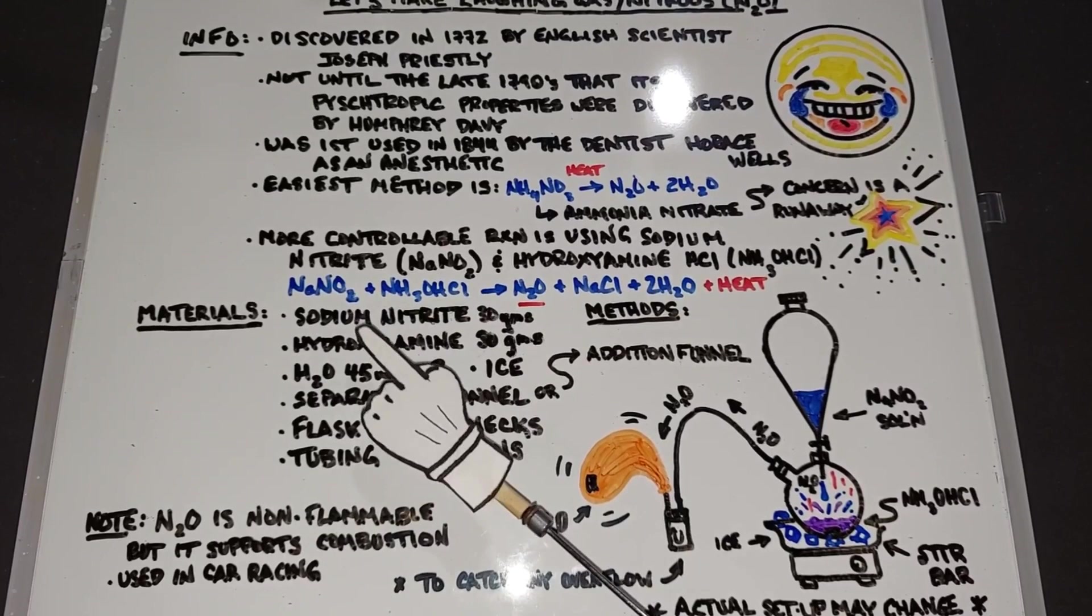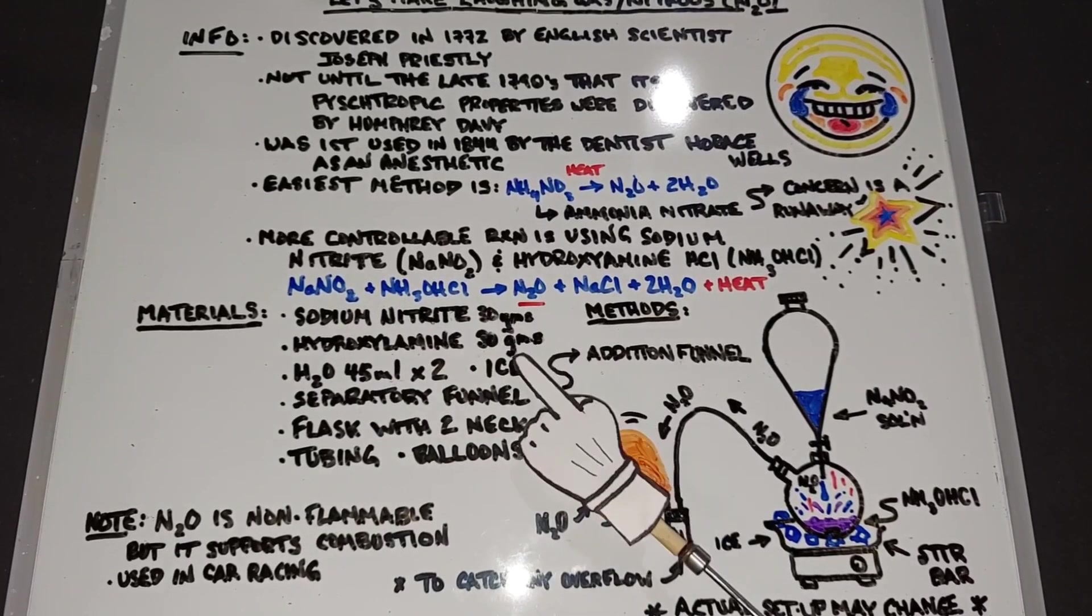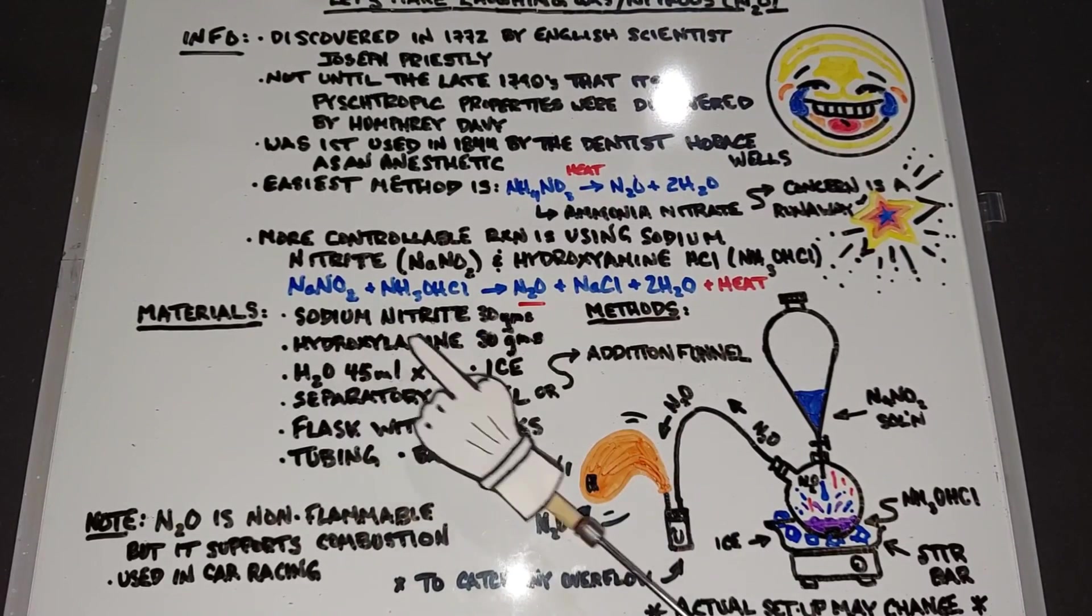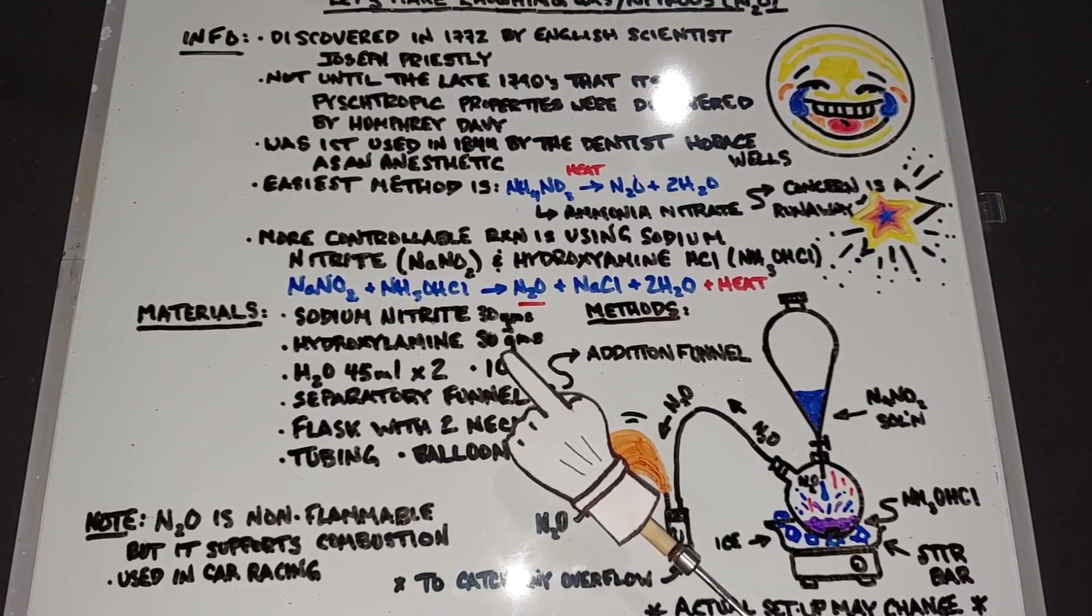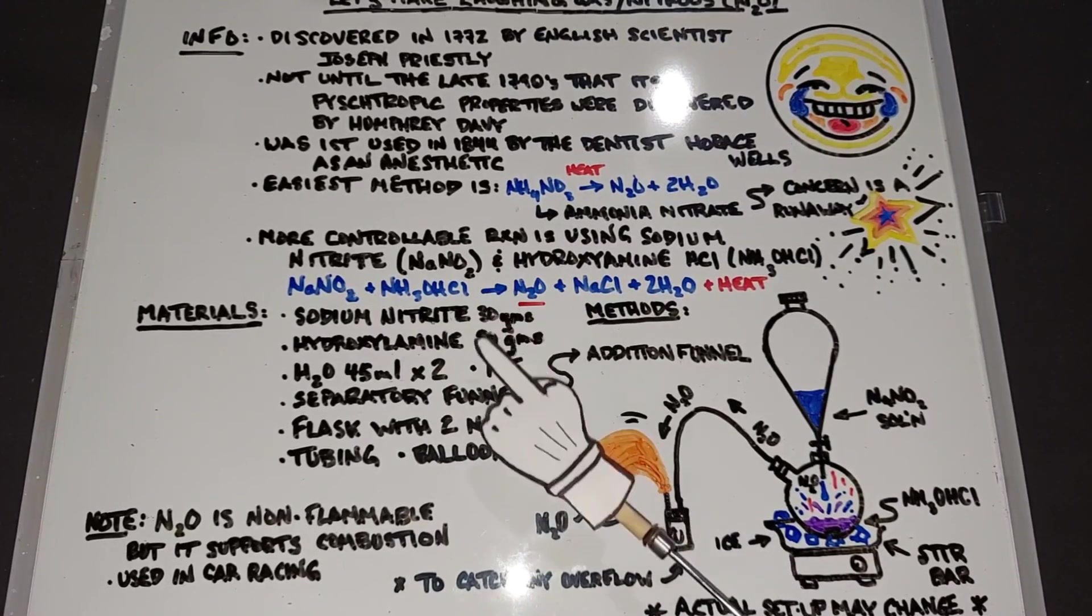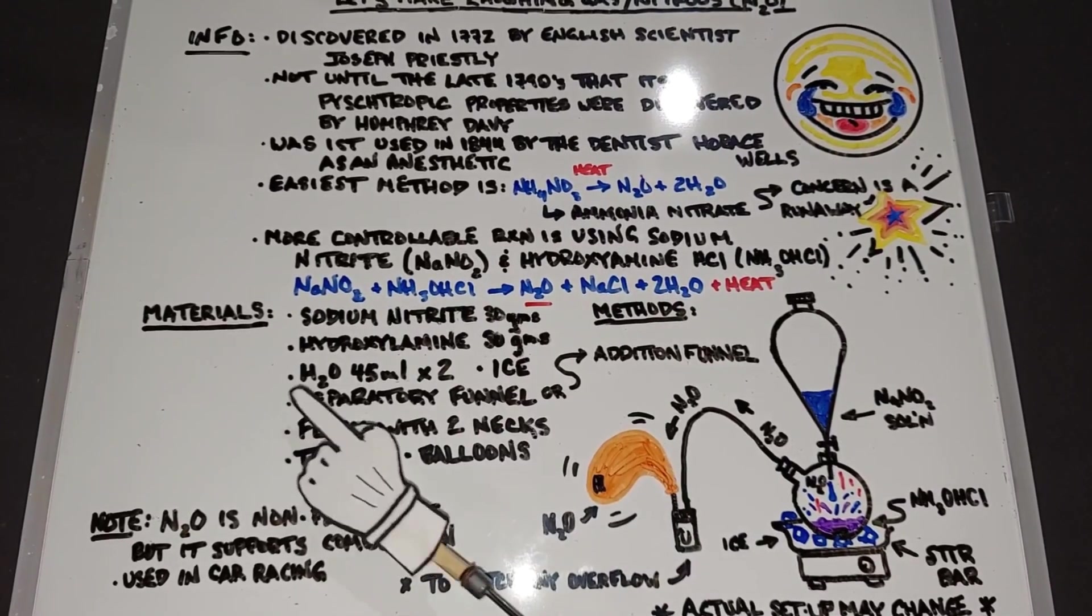In our materials we need some sodium nitrite, I wrote down 30 grams for both of these, it's going to be somewhere between 20 and 30 grams. Hydroxylamine 30 grams, again between 20 and 30 grams. However, because this is a one-to-one reaction, whatever I choose for one will be used for the next.